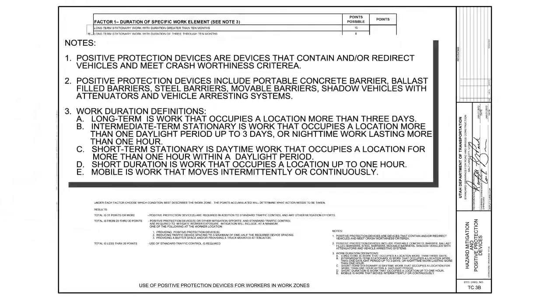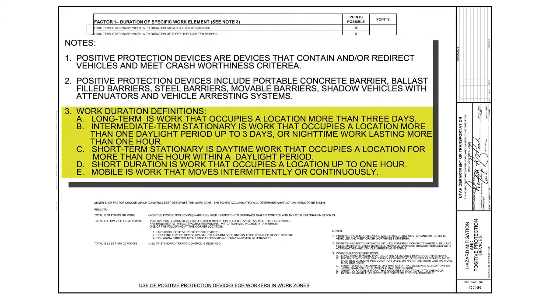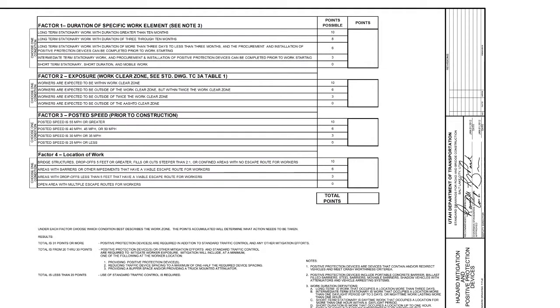First, let's look at the notes. Notes 1 and 2 provide a definition for positive protection devices and what they include. Note 3 provides work duration definitions. These definitions match those found in the MUTCD. Now let's look at some work site conditions and work through this table.